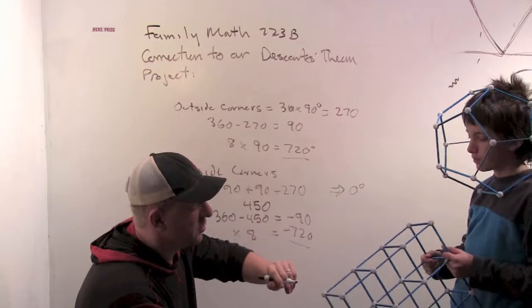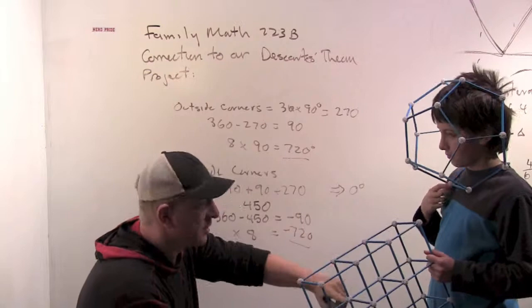for the dodecahedron, we got 720. For this, we got zero. Last time we got 1440. Both times we got something different, so it was telling us they can't be deformed into each other. Yeah.